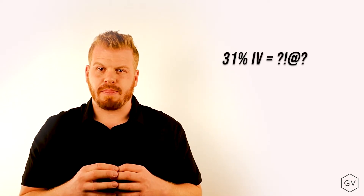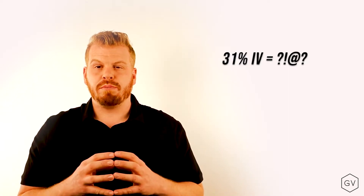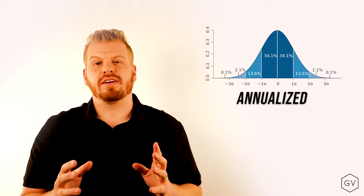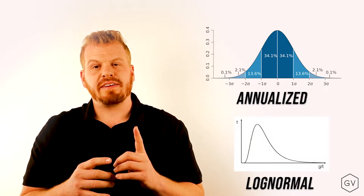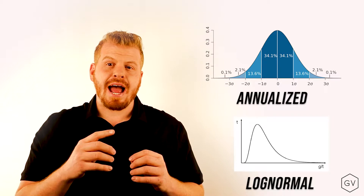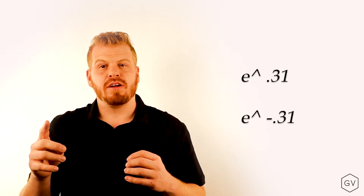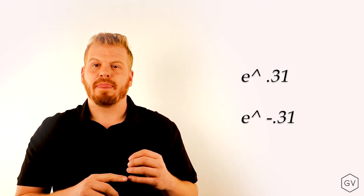The next question is: what does this implied volatility number mean? What does 31% implied volatility mean? By convention, implied volatility refers to one standard deviation over a whole year of continuously compounding returns. One standard deviation of 31% means the option is pricing that the underlying asset is going to move 31% continuously compounded up, or 31% continuously compounded down, per year. That's what the option is implying — that's why we call it implied volatility.